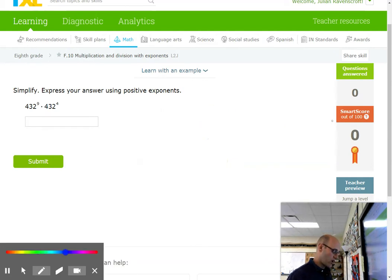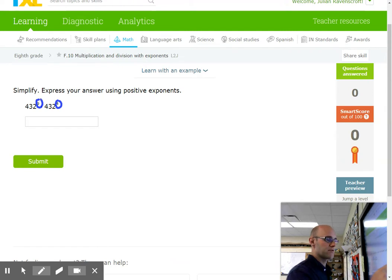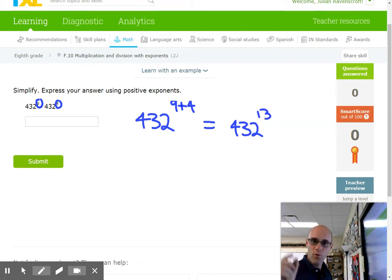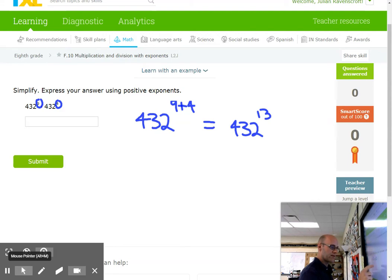Hey, in this first problem, we have 432 to the 9th and 432 to the 4th. So, only multiplication happening right now. Just a quick review to make sure we understand the basics. So on this problem, 432. Okay. If there's 9 of them, then there's 4 more of them, we would just want to add how many there are. And so we just take the exponents and add them. We'd say, okay, there's really just, you know, 13. 9 plus 4 is 13. There'd be 13 of these 432s being multiplied or being connected with dots.